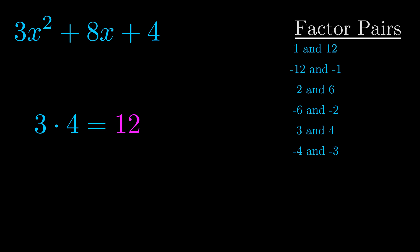The b value is the coefficient on the x term. That's the middle term, the one that we haven't done anything with yet. And really, this is the only factor pair that we need.